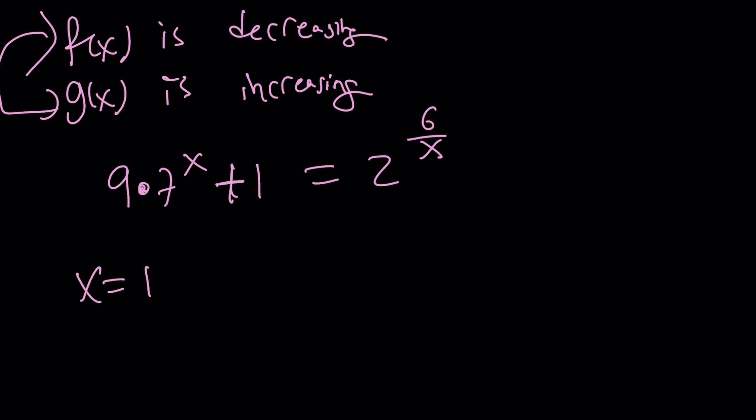Guess what? If x equals 1, then we get 64 equals 2 to the power of 6, which is true. So, that is a solution. And it is the only solution because they can only intersect at a single point. Now, let's go ahead and check out the graph of these two functions, which will hopefully make things more clear.